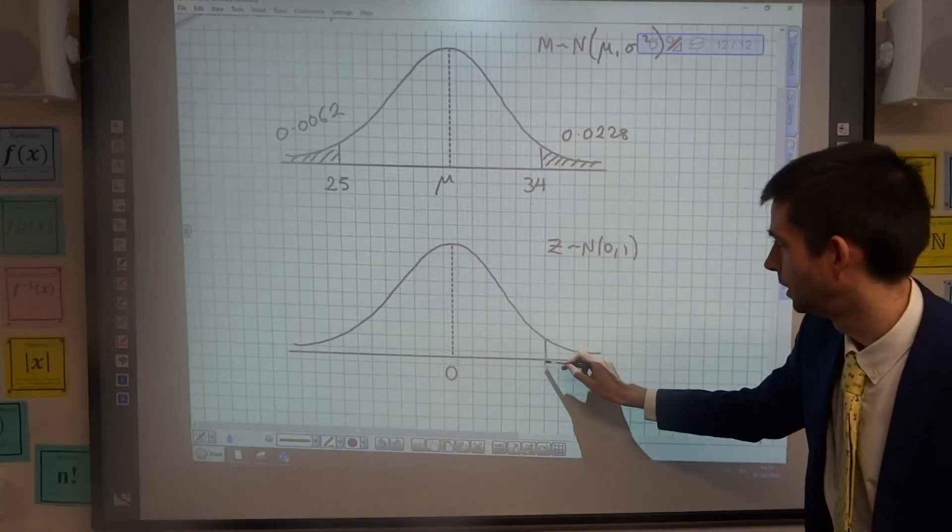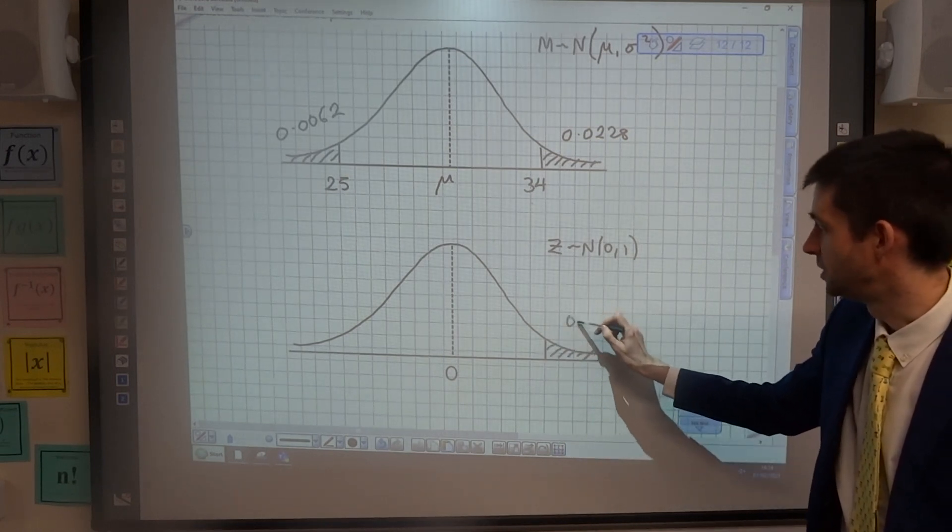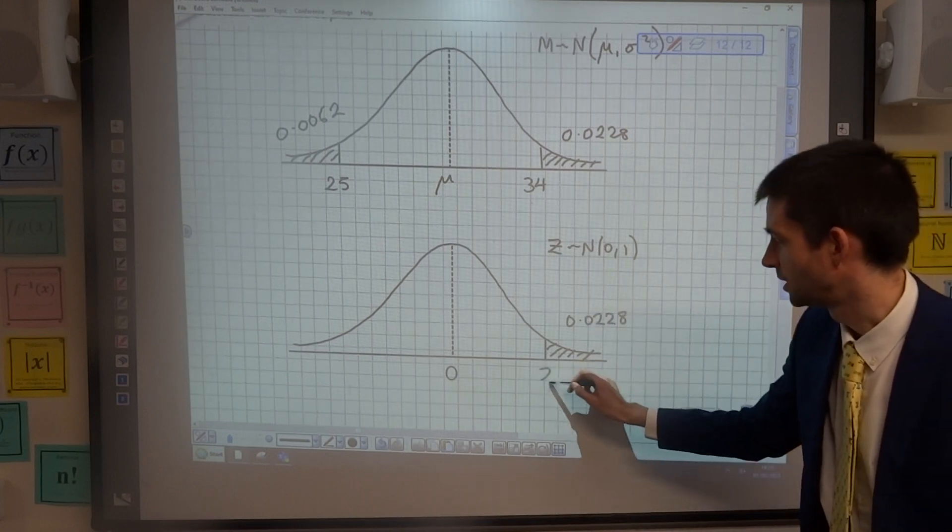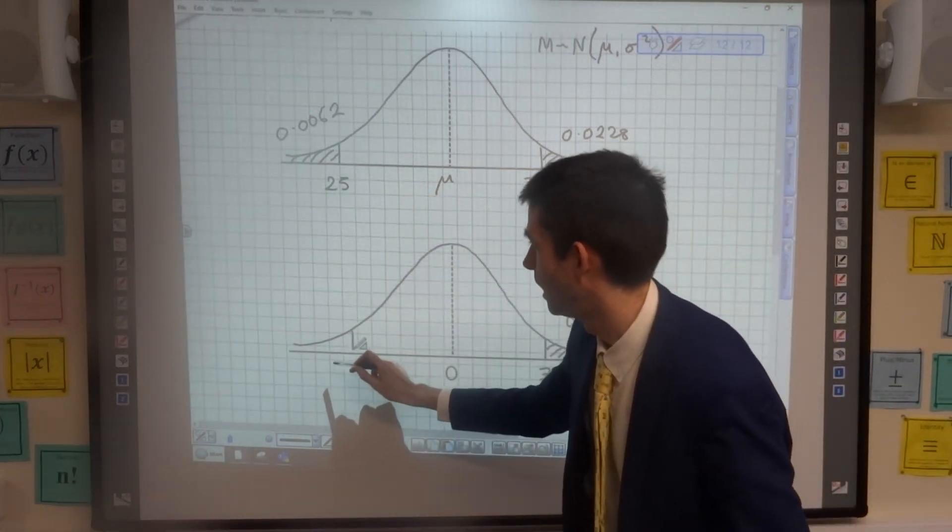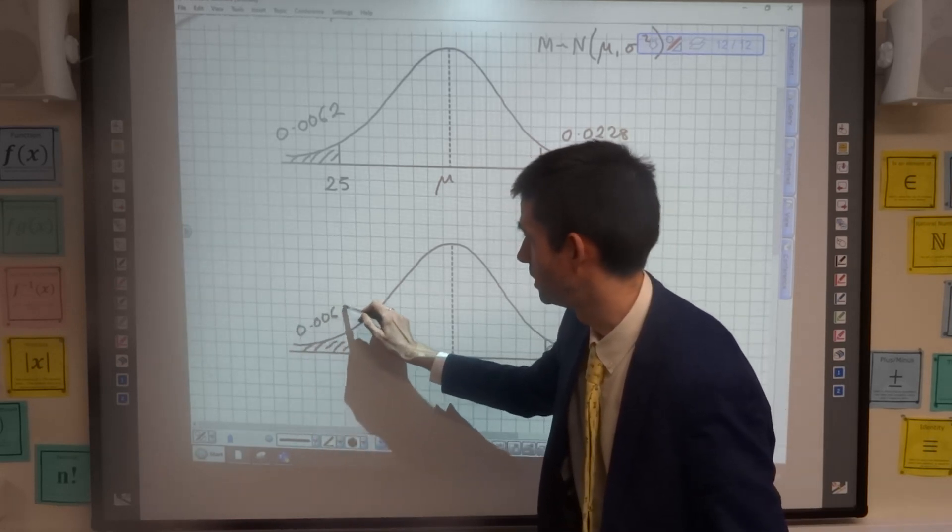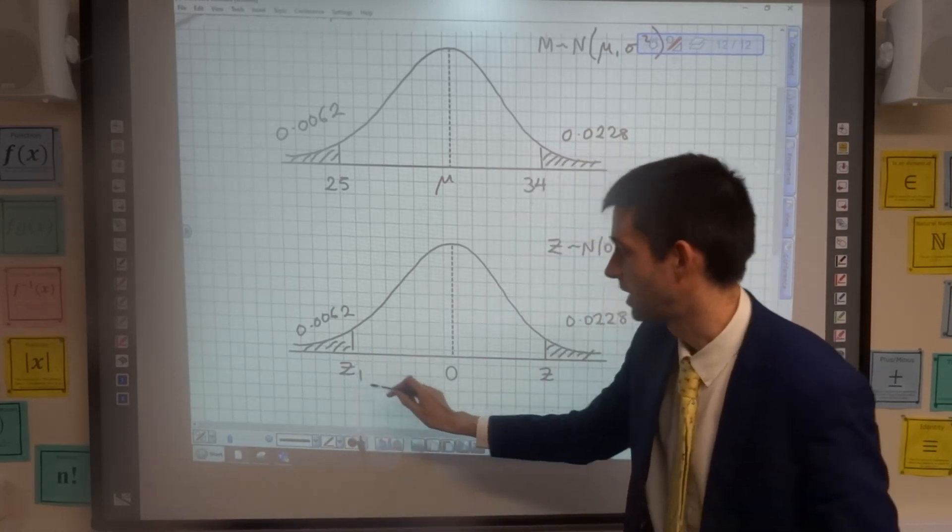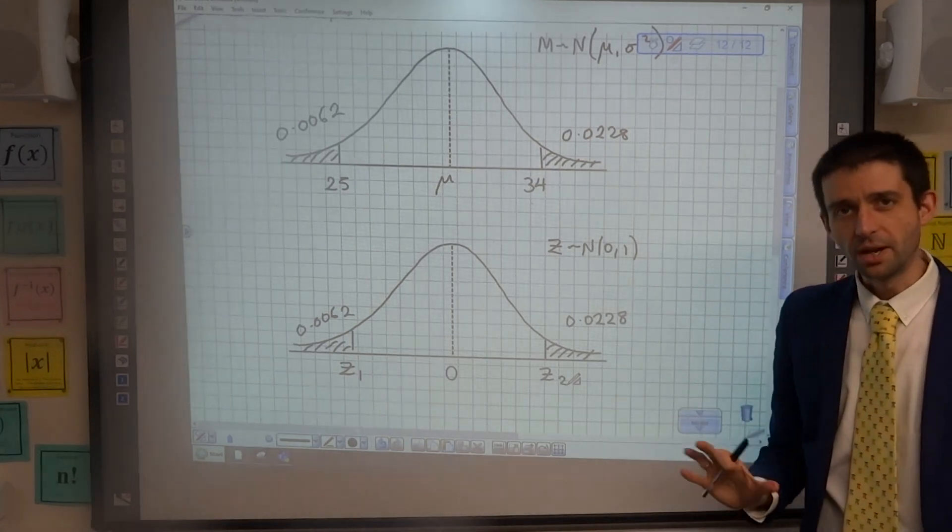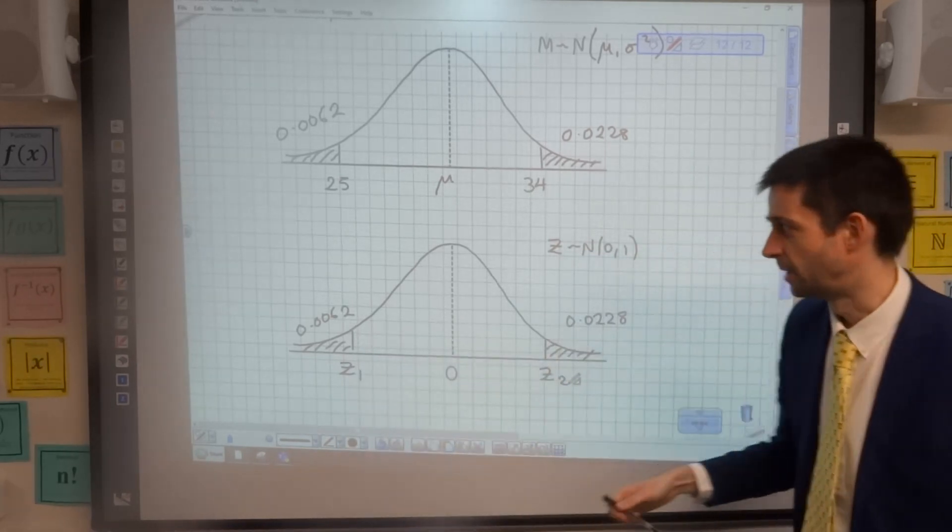If I pop my mean line in, I've got a mean of zero. If I line up underneath my 34, that area there can be 0.0228, and that's a value of z. Similarly, if I line up with the 25, I've got an area to the left which is 0.0062, and that's a different z value. So I'm going to call that one z1 and that one z2. I can use my inverse normal function on the calculator to find these two z values.